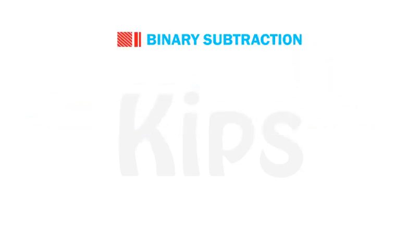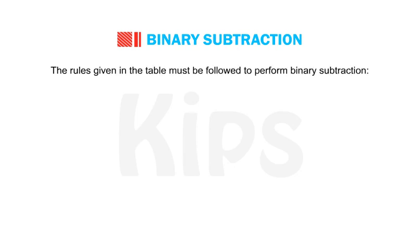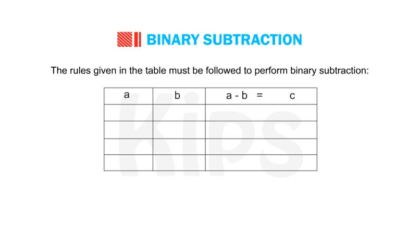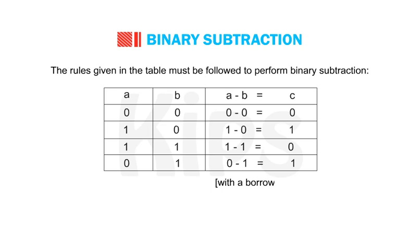Now we shall learn how to subtract binary numbers. The rules for binary subtraction are: 0 − 0 = 0; 1 − 0 = 1; 1 − 1 = 0; and 0 − 1 = 1 with a borrow taken from the next place.